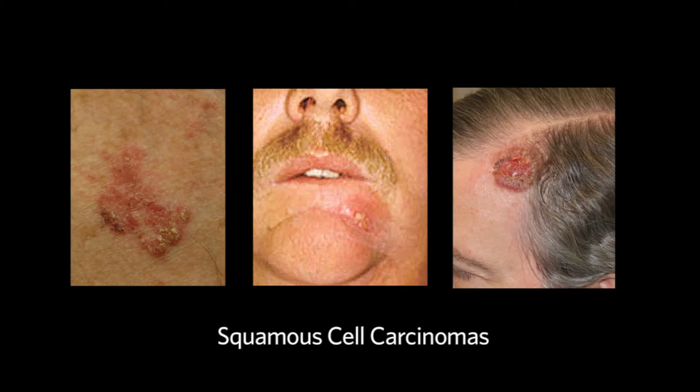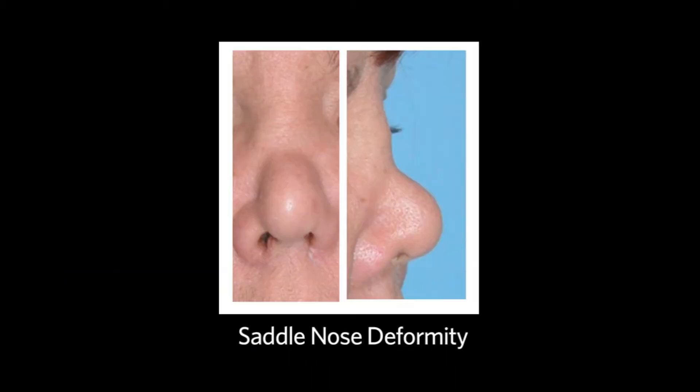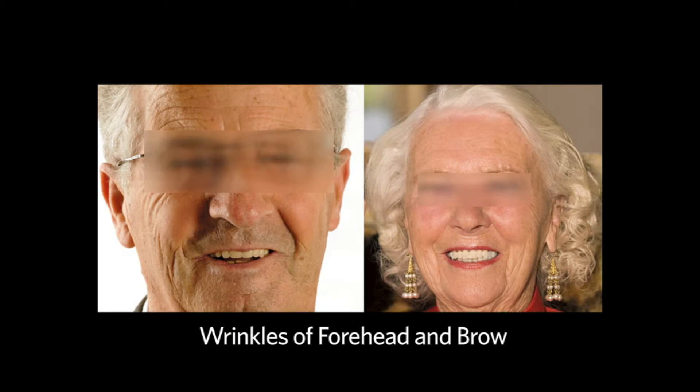Common abnormalities seen are squamous cell carcinomas and basal cell carcinomas, obvious asymmetry or deformity of the nose, or wrinkles of the forehead, around the eyes, or upper lip.